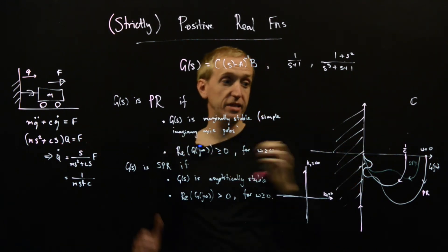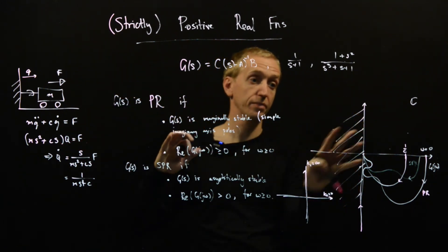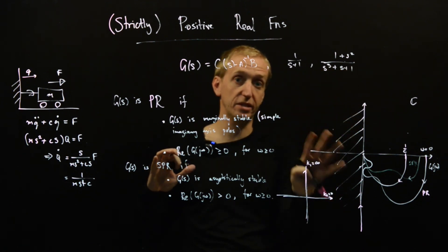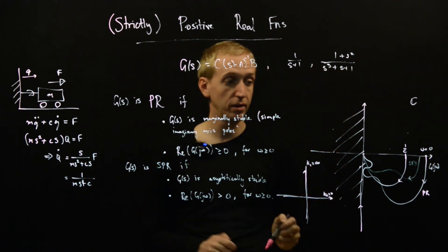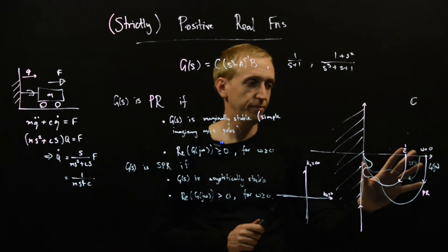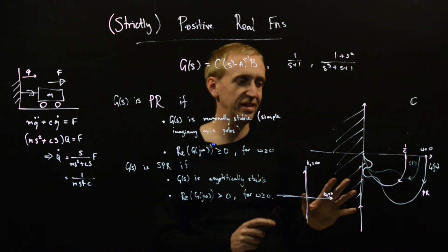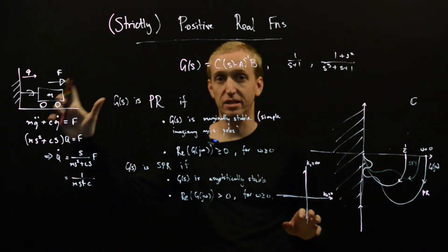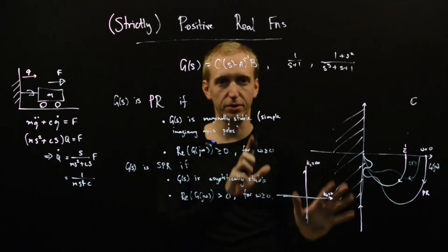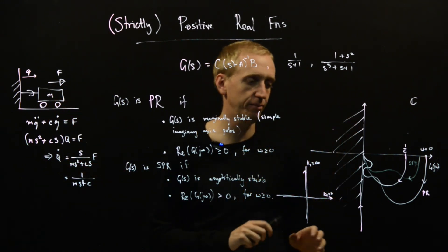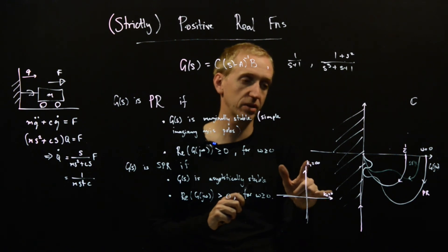And the circle that we have to draw gives us this entire forbidden region here. And so we're sort of starting to see that if we have these systems that dissipate energy, it somehow corresponds to the circle criterion, but with these extreme values of the slope.